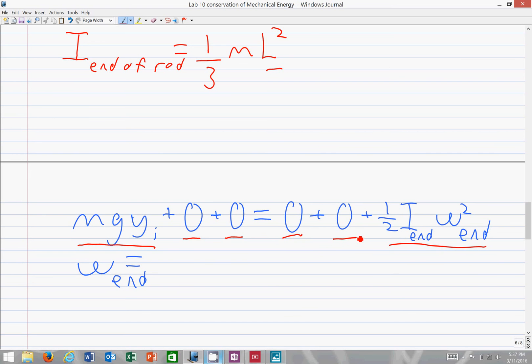We simply rearrange to solve for the final angular velocity at the end of the rod, of course, the meter stick. And the conservation statement rearranges like so. And if it's not clear, I'll rewrite this. There.